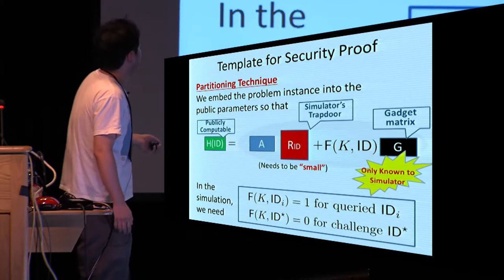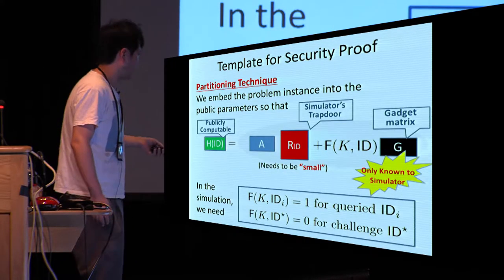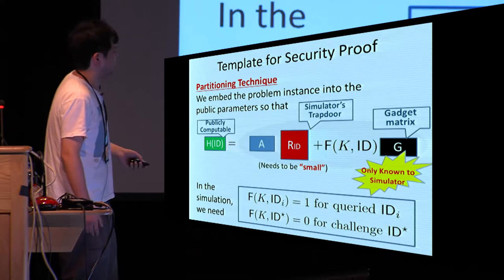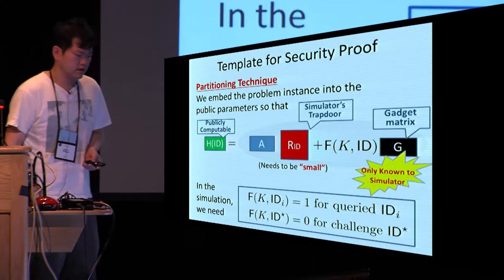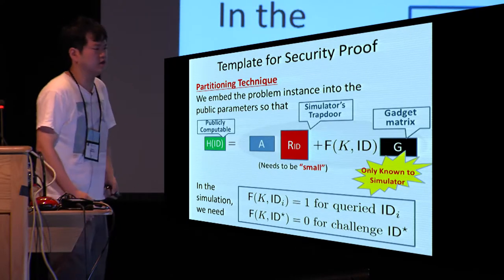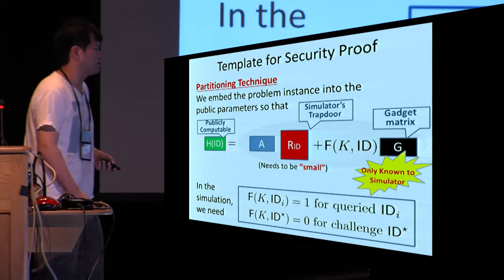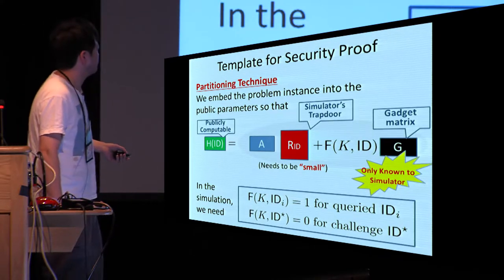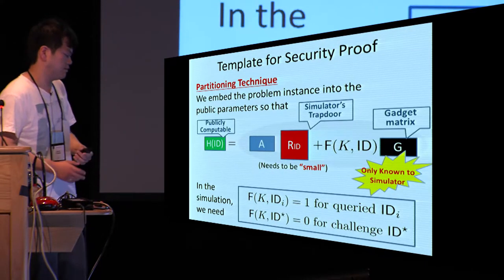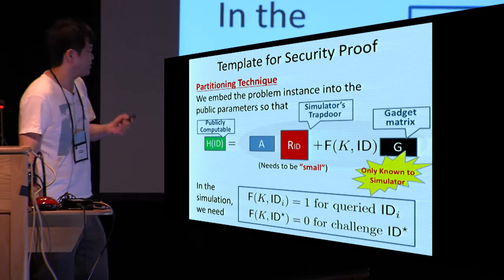In the simulation, we need two conditions. First, F(K, ID_i) = 1 for all queried identities ID_i, which allows us to simulate a secret key in the security proof. Second, F(K, ID*) = 0 for the challenge identity ID*, which allows us to embed the problem instance of the LWE assumption into the challenge ciphertext.